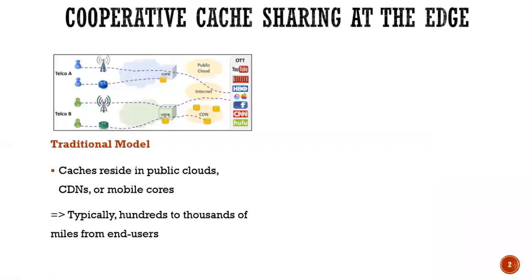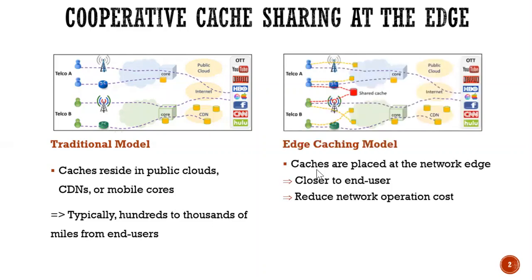I'll start with a traditional network model. Currently, cache sharing resides in public clouds or mobile cores. You can see here, it means that it's very far from end users. With edge computing, the caches are closer to end users. You see here, right? It helps to reduce the network operation costs.